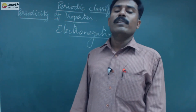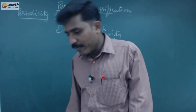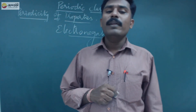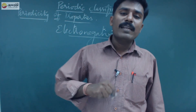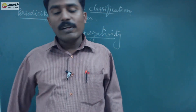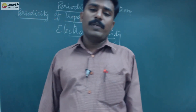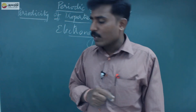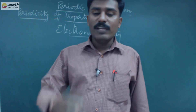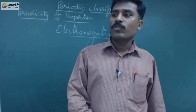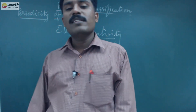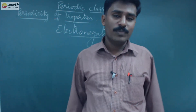An atom has an absolute value of electron gain enthalpy, but electronegativity is a relative tendency. Electronegativity depends upon the bonding state — for example, sp hybridized state is more electronegative than sp2, and sp2 is more electronegative than sp3. Electronegativity does not change regularly in a period or group, but electron affinity gradually changes regularly in a period and a group.